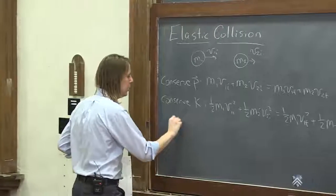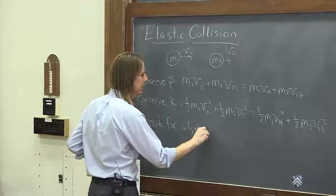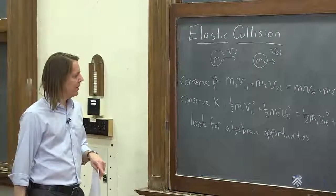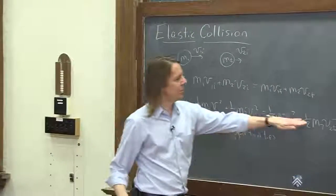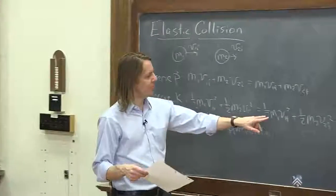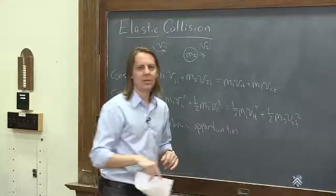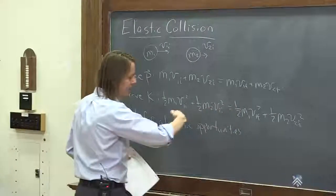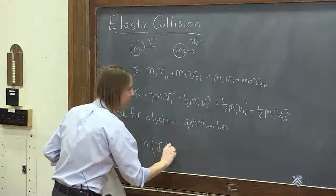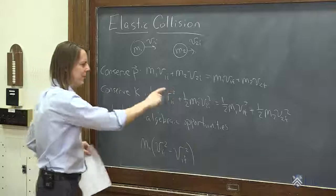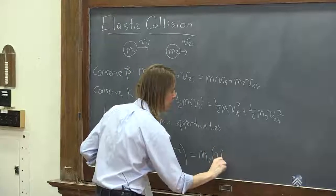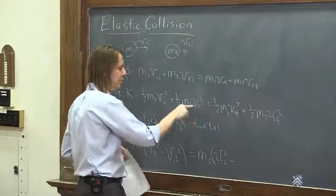Let's look for algebraic opportunities. An obvious one: multiply the energy equation by two to get rid of all the halves. Then group terms by mass: M1 times V1i² minus V1f² on the left side, and M2 times V2f² minus V2i² on the right side. We moved terms across the equals sign to separate the M1 and M2 groups. It's still full of squares, but notice — it's the difference of two squares.